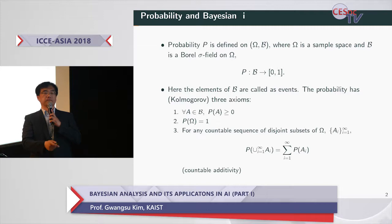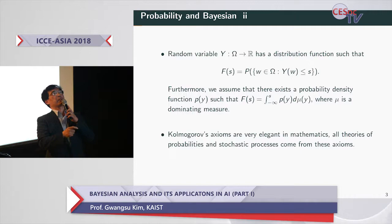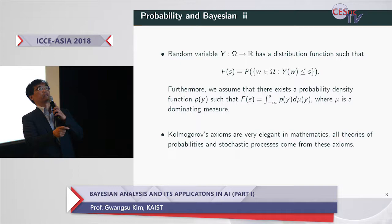The main contribution of Kolmogorov is to construct these axioms. From these axioms, you can define the limit distribution and the stochastic process. A random variable Y can be defined, and Y has a distribution function F, which is induced from the probability.